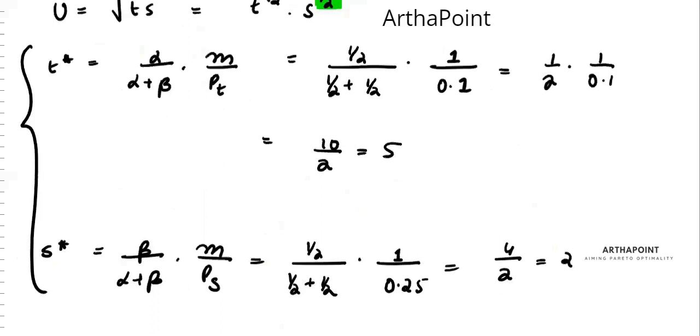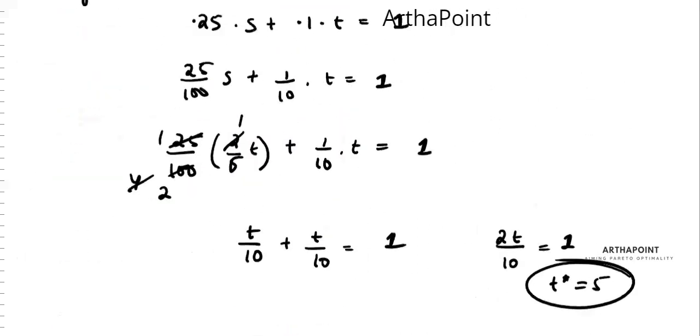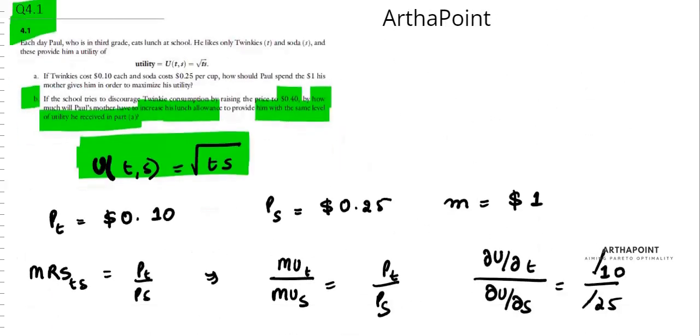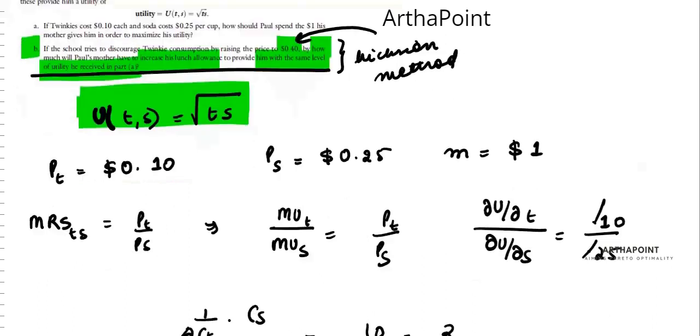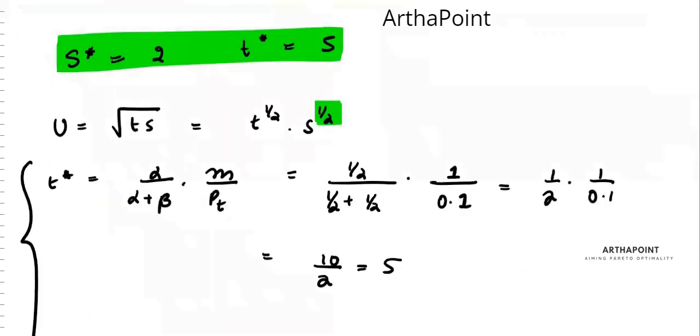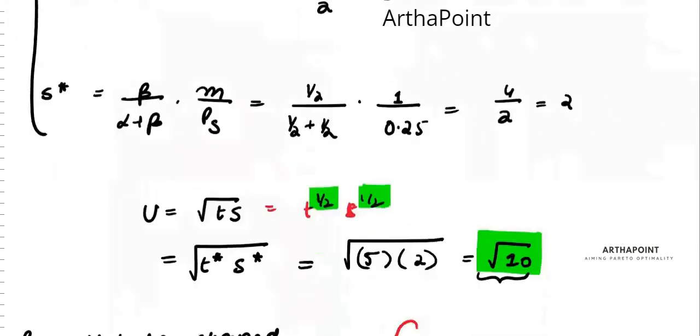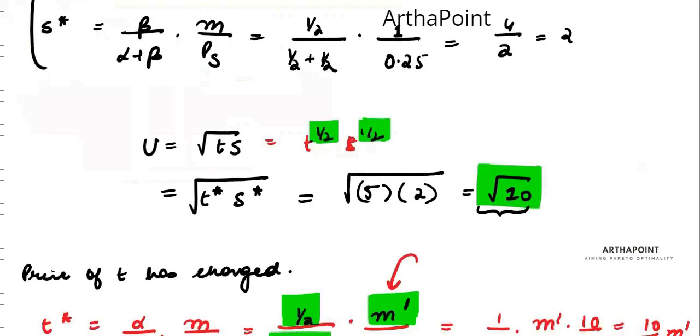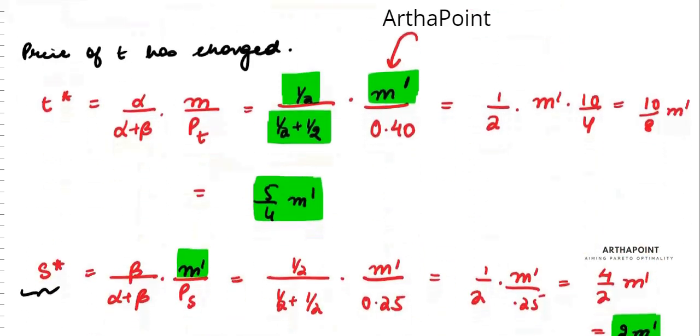So his income must change by 1. Look at the question very carefully. What am I doing? The question is asking what happens if he wants to derive the same level of utility but price has increased. It is like doing the same level of utility - you calculate the utility that you were getting earlier. So I was getting root 10 utility.